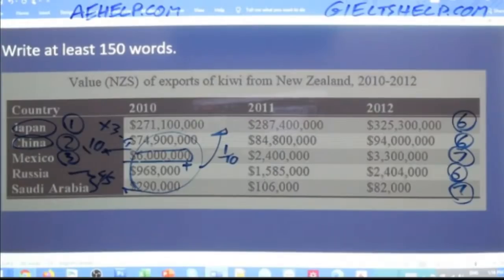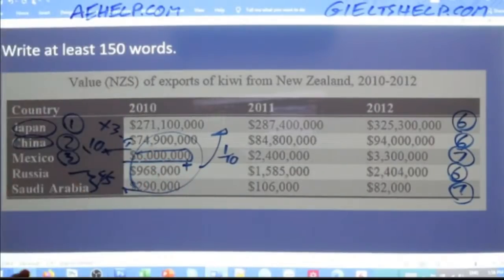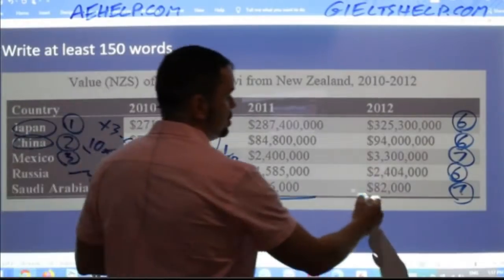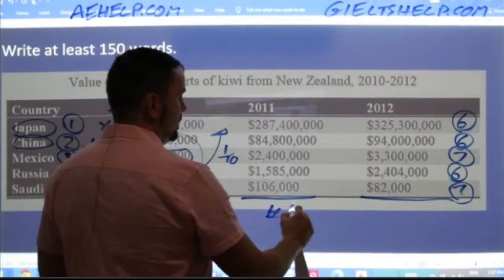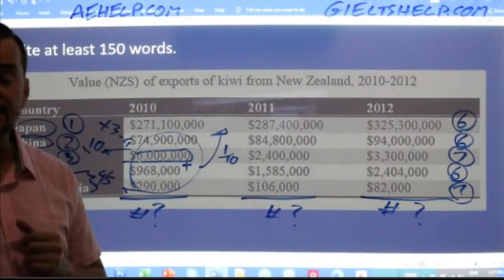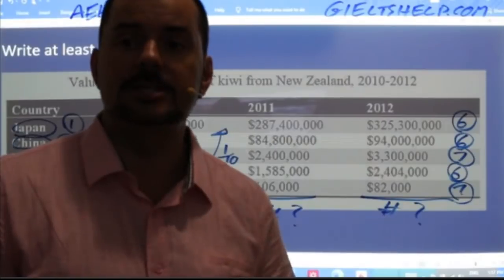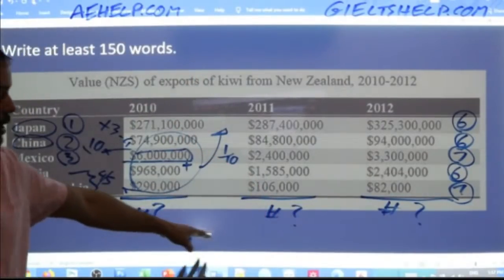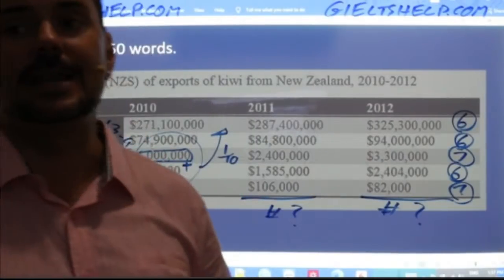The summation point would work really well as a summary: what were the overall sales to these five countries across the three years? That would be a great Band 9 summary addition. Make sure you have time for it though. Now let's go step by step — let's discuss Japan first, emphasizing its importance in the kiwi industry for New Zealand. So: 71 million in 2010, 87 million in 2011, 325 million in 2012.